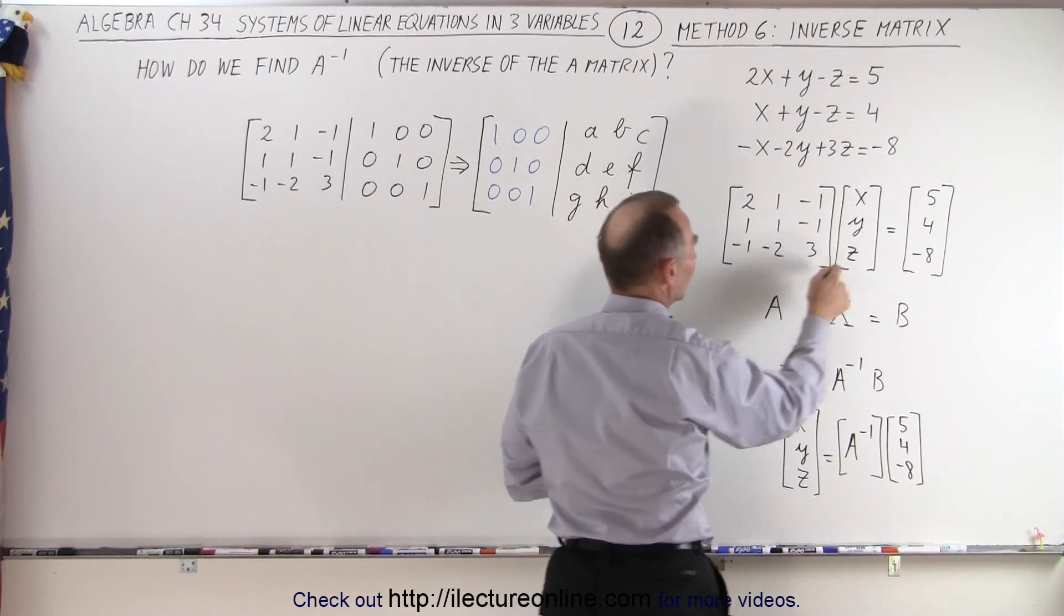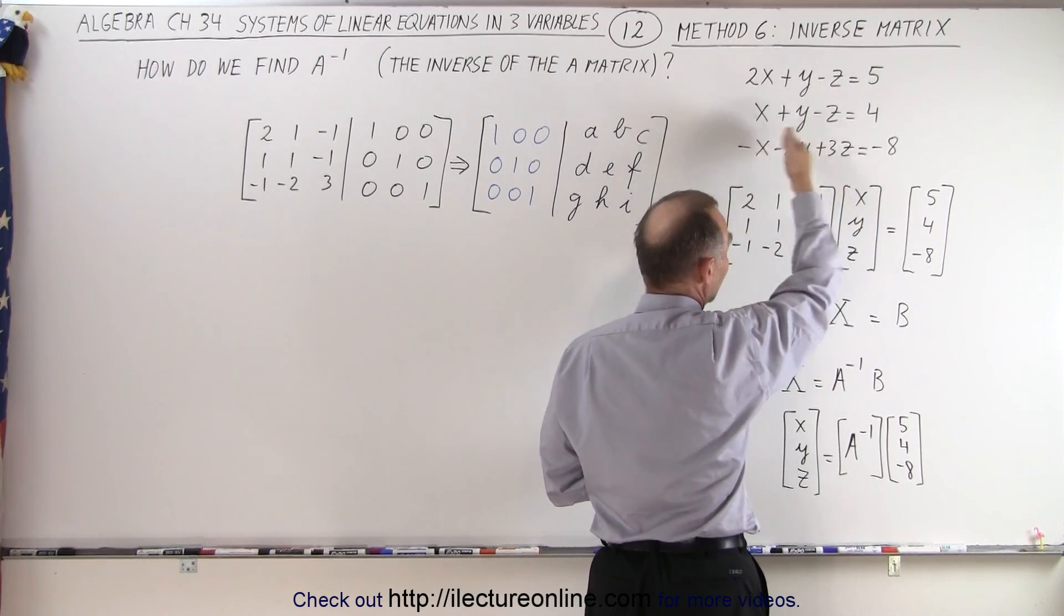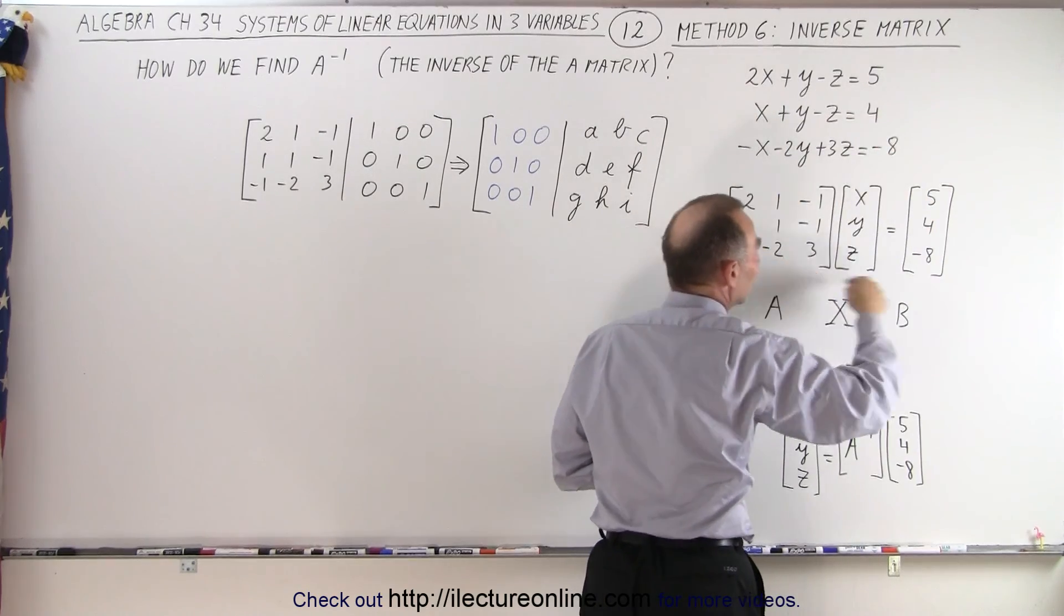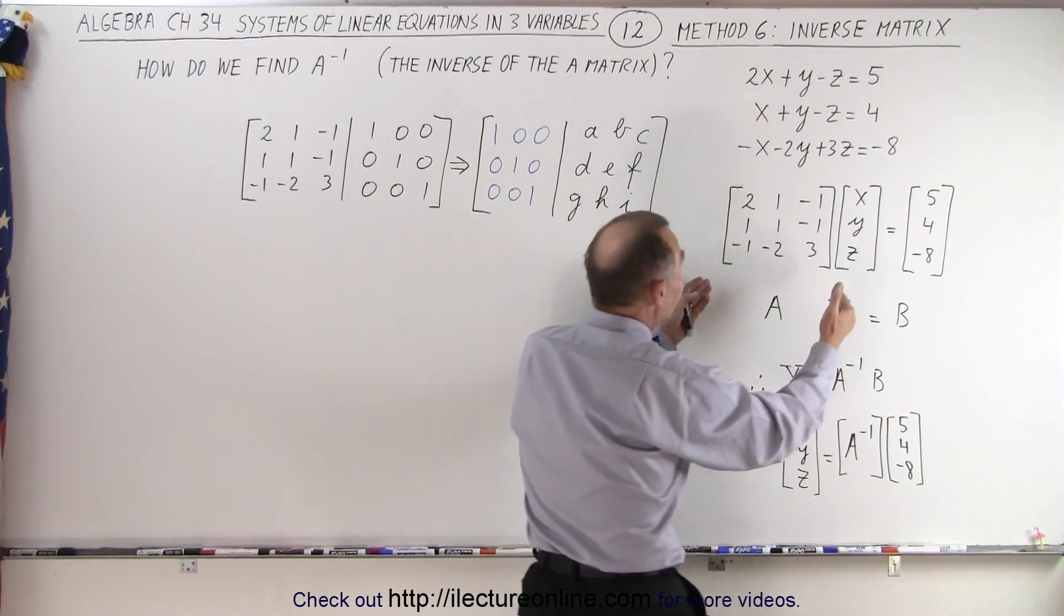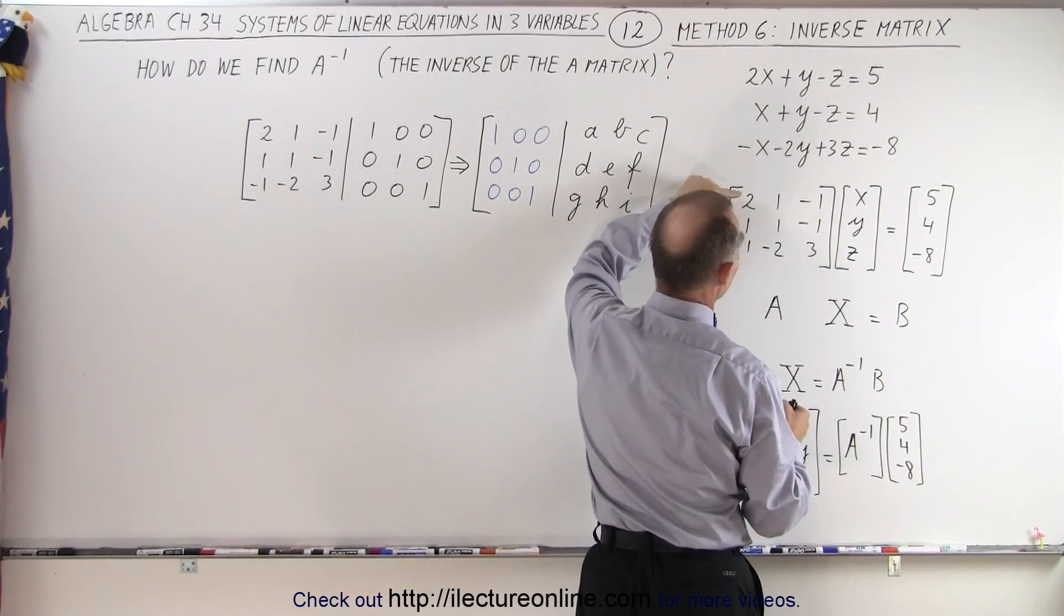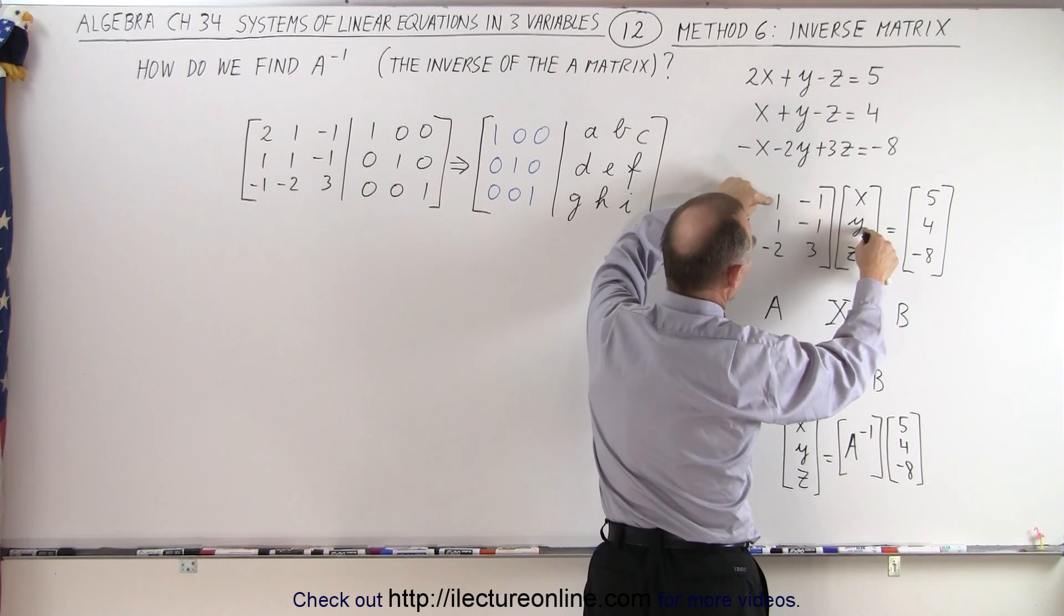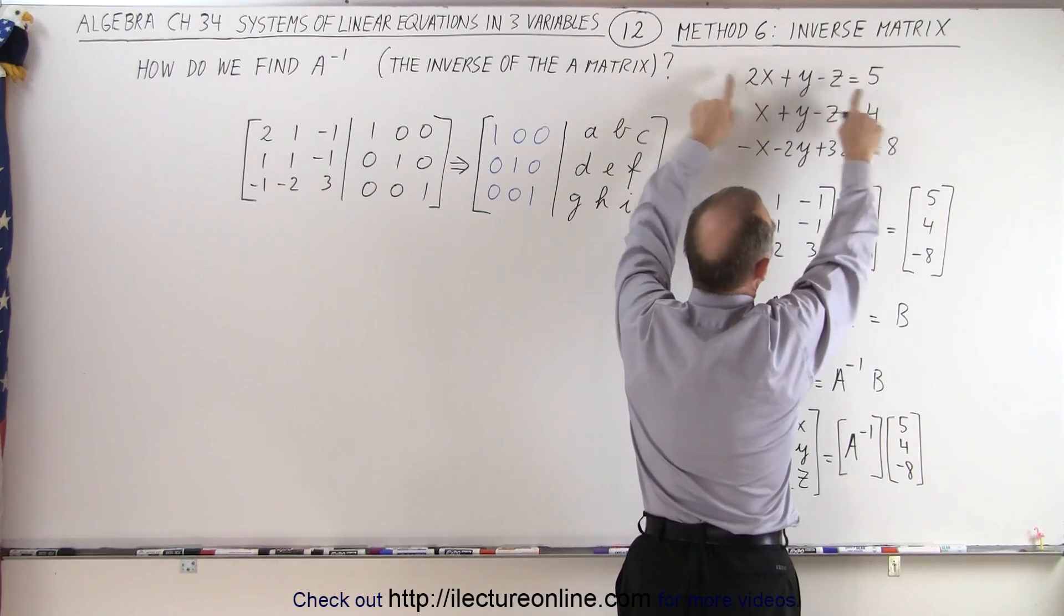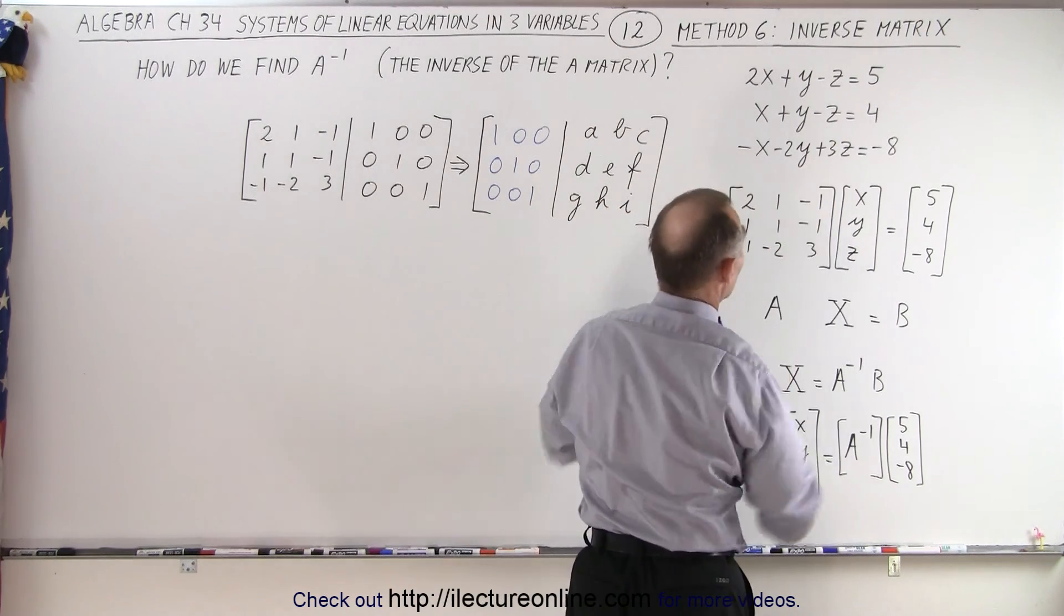Then we multiply this matrix times the x, y, z matrix, which represents the three variables, and we set it equal to the constants. This matrix format is exactly the same as what we have written here because you multiply this element times x, so 2 times x, plus 1 times y, minus 1 times z, equals 5. That's what our top equation says. It's just a different form of writing these very same equations.